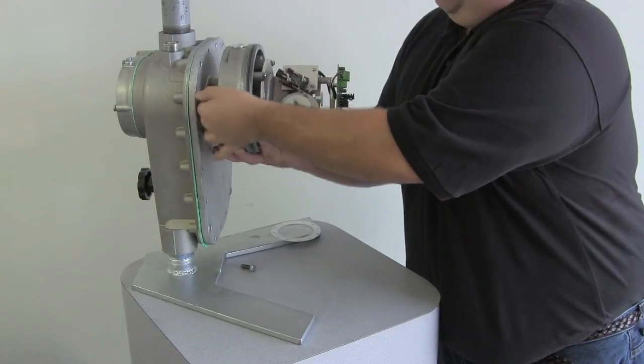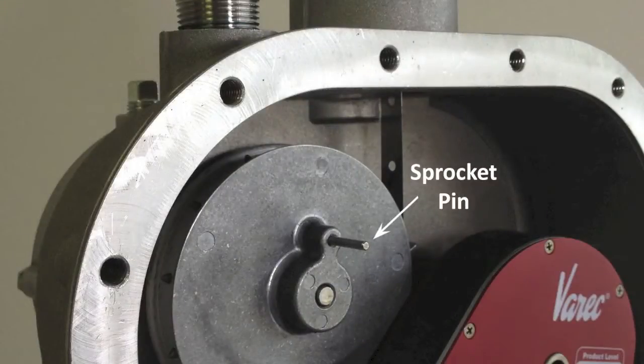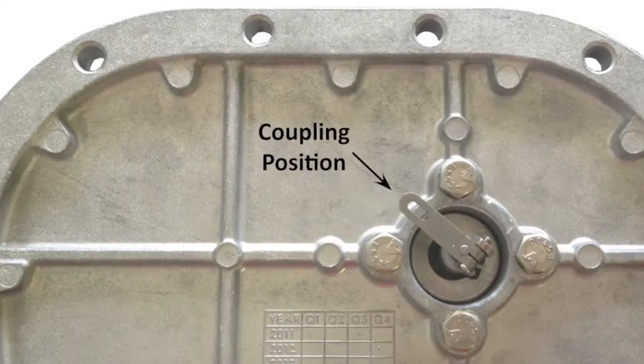Then remove the cover of the transmitter and open the back cover of the gauge. Identify the gauge's pin and transmitter coupling position.